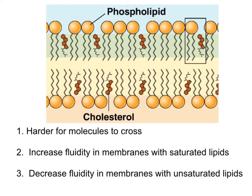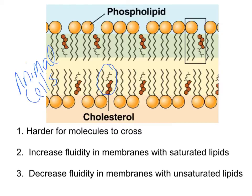Cholesterol is found in the cell membranes of animals only — not in plant cell membranes. Cholesterol has a big impact on the fluidity of the membrane. It can make the membrane less permeable, making it harder for molecules to get across. The cholesterol can form a loose bond with those hydrocarbon tails coming off the phospholipid, making it harder for molecules to cross.